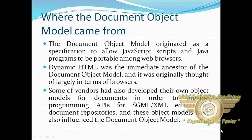So where did the Document Object Model come from? The Document Object Model originated as a specification to allow JavaScript and Java programs to be portable among web browsers. Dynamic HTML was the immediate ancestor of the Document Object Model and it was originally thought of largely in terms of browsers. Some vendors had also developed their own object models for documents in order to provide programming APIs for SGML and XML editors or document repositories, and these object models have also influenced the Document Object Model.